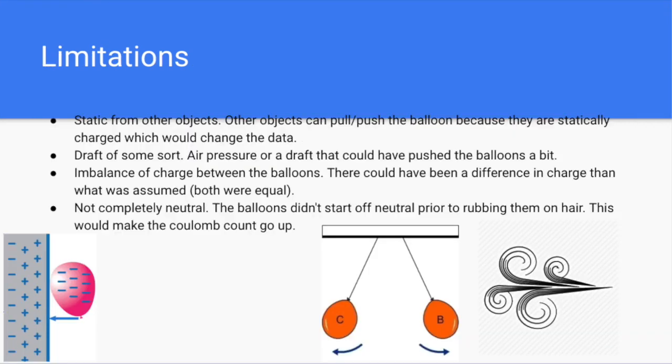Like most experiments, this one was not absolutely perfect. There were many variables that could not be accounted for, such as different charges on other surfaces that are near the balloons, which could attract or repel the balloons. There could also just be some sort of draft or something that pushes or pulls the balloons a certain way that gives it a greater or smaller distance. And we're not sure if we completely neutralized the balloons prior to each trial.